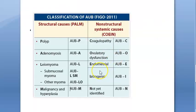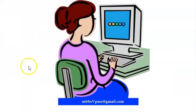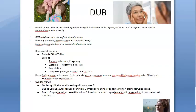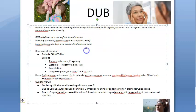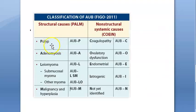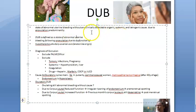Now let's look at DUB — dysfunctional uterine bleeding. DUB is diagnosed when you exclude all causes: polyps, adenomyosis, leiomyoma, malignancy, coagulopathies, ovulatory dysfunction, endometrial causes, iatrogenic causes, and not-yet-identified causes. When no actual cause is found for the abnormal uterine bleeding, it is called dysfunctional uterine bleeding.